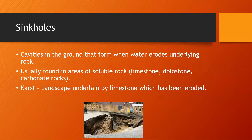Sinkholes are basically holes in the ground that form whenever water interacts with a soluble rock. The water interacts with it and starts to create cavities, which over time keep growing until the overlying soil eventually collapses or subsides. This is usually found in areas of soluble rocks such as limestone and dolostone. Karst topography is all over Kentucky — it's a landscape underlain by limestone that has already been eroded, so it's basically a bunch of caves underground.